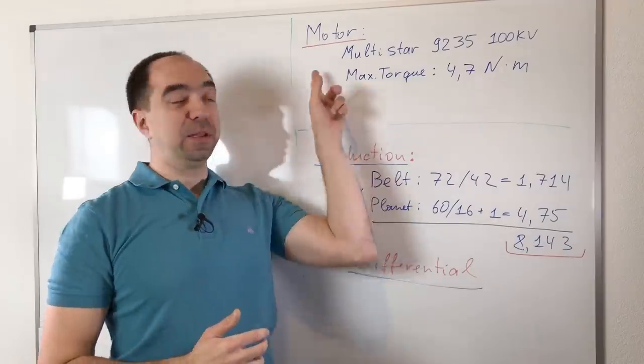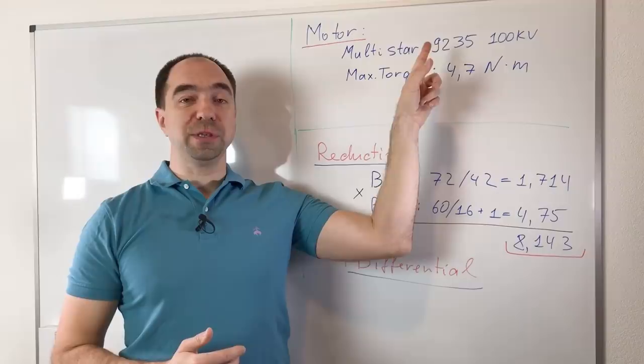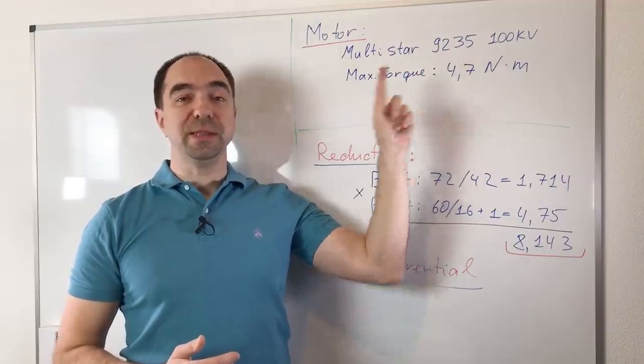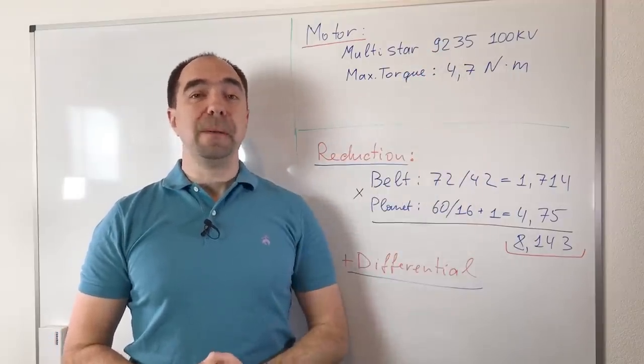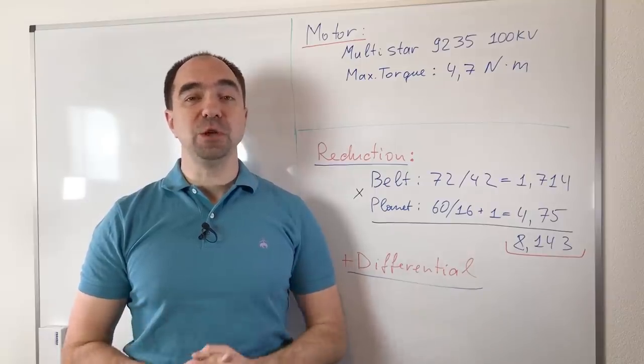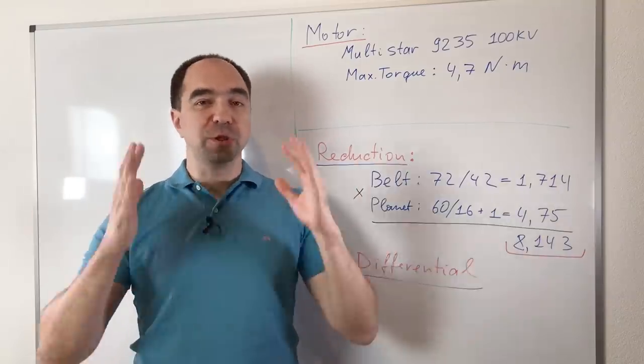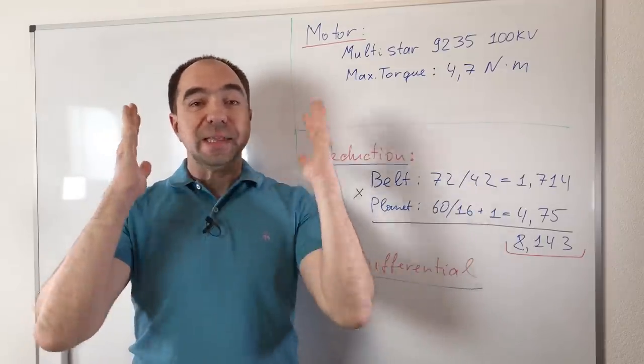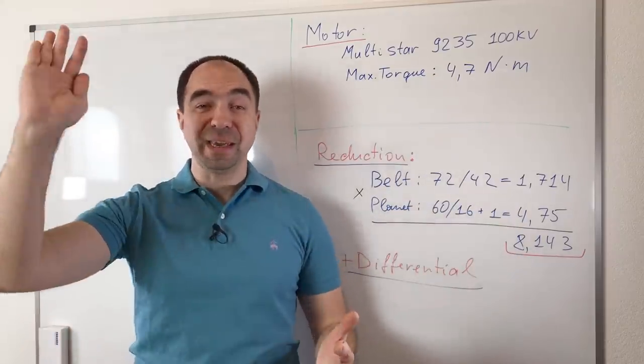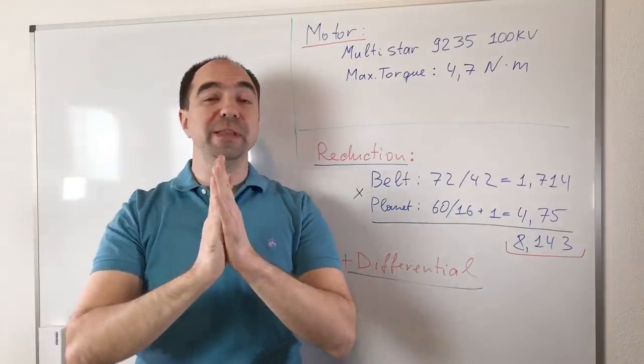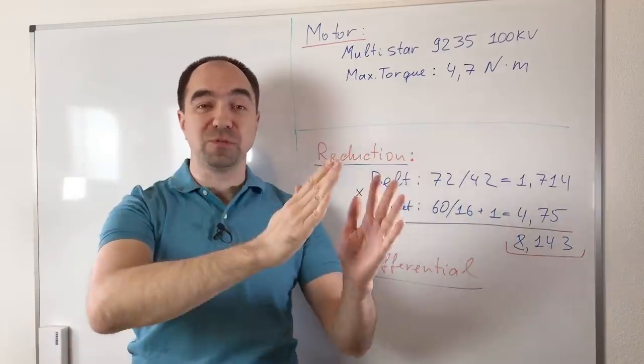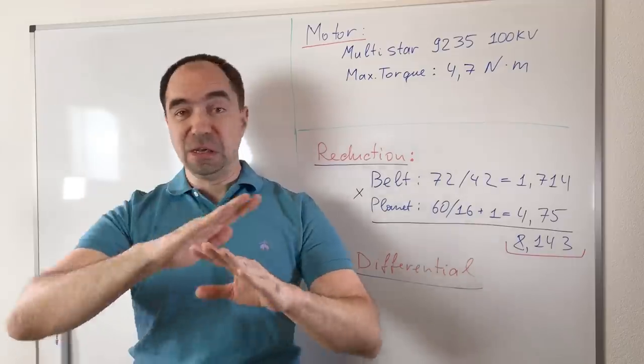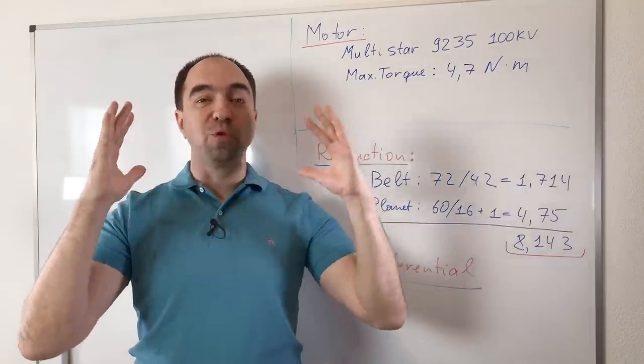I use these two motors, the 92-35 with 100 kV. These motors can produce a maximum of 4.7 Nm torque, which is a lot, but you should understand this is really maximum. At this torque the motor heats up really crazy. Without cooling, in 30 seconds it goes from 20 degrees to 60 degrees, or you need a super efficient cooling system.